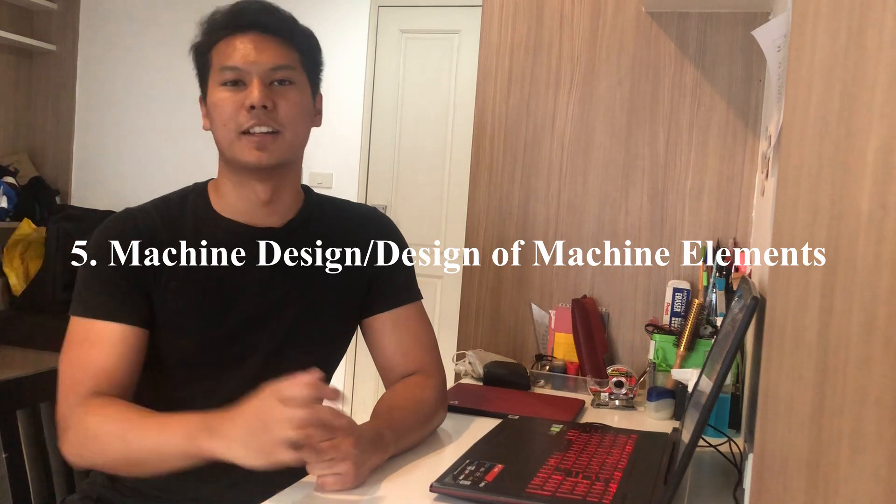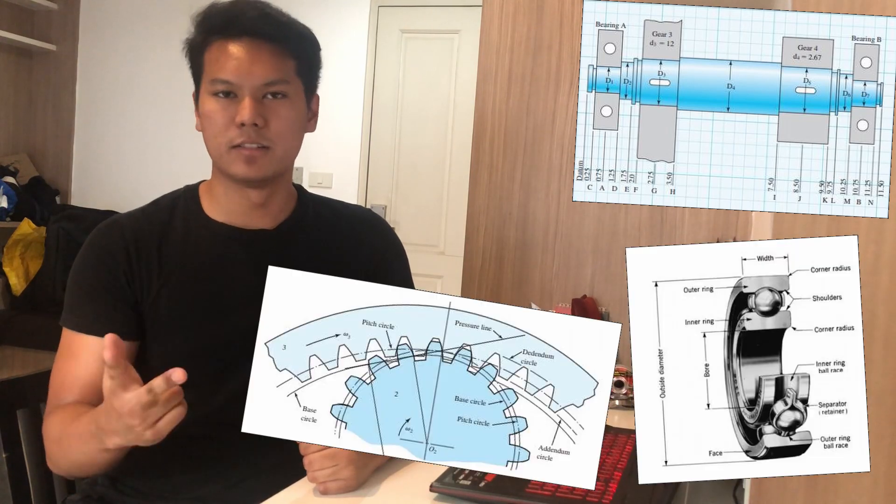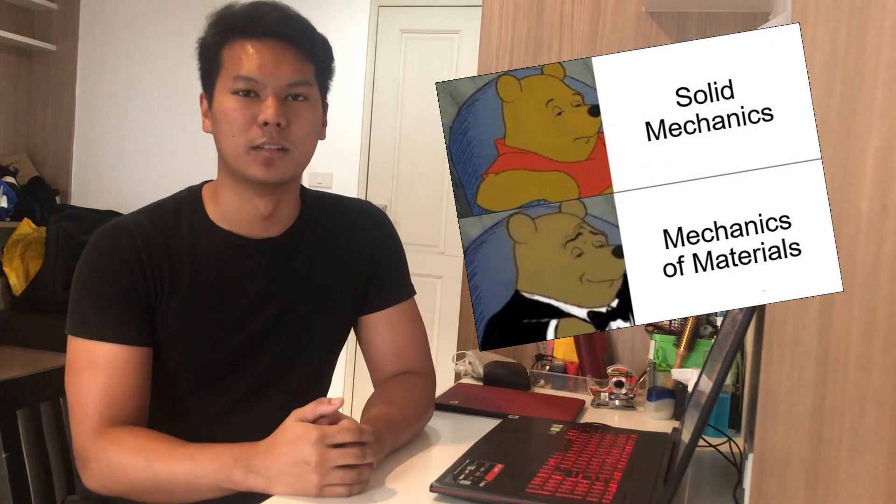Number five on the list is going to be machine design, slash design of machine elements. This is actually one of the more important classes in mechanical engineering. As the name implies, this class is all about the design methods of mechanical parts such as shafts, bearings, gears, springs, and so on. You need to have a solid foundation of basic physics, statics, and most importantly mechanics of materials, or solid mechanics depending on what university you're from, and a little bit of math of course.